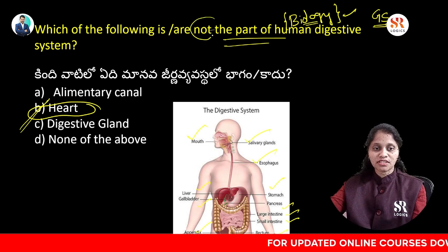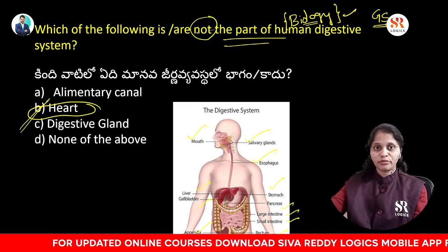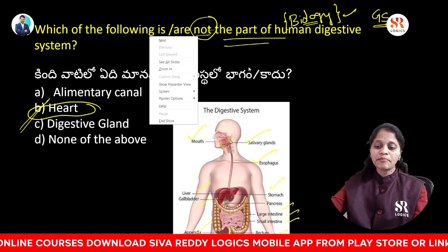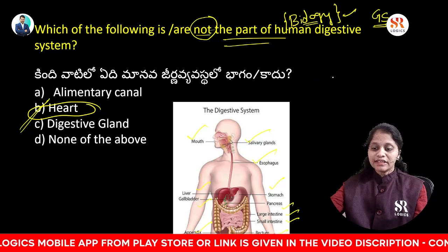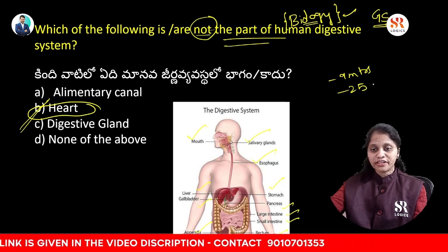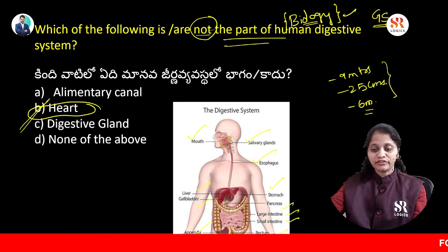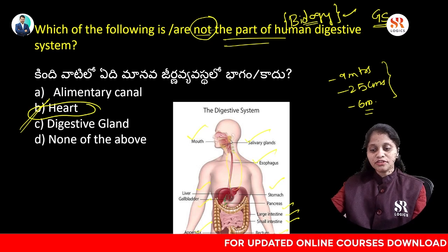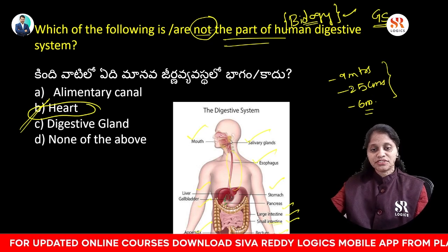We can also look at this question in an indirect format: which of the following is not a part of the human digestive system? Read the question properly. You can also note that the length of the alimentary canal is 9 meters, the esophagus is 25 centimeters, and the small intestine is 6 meters.